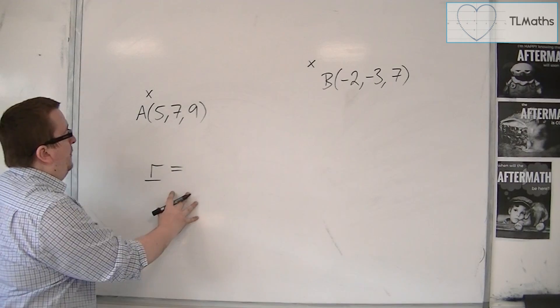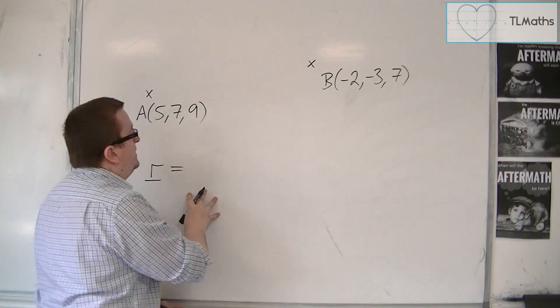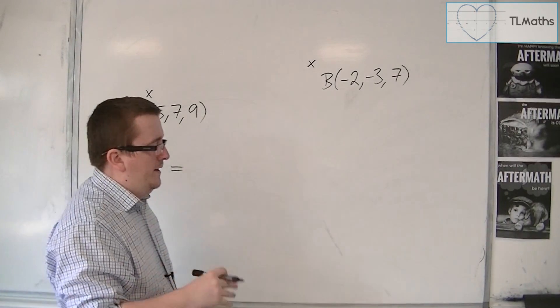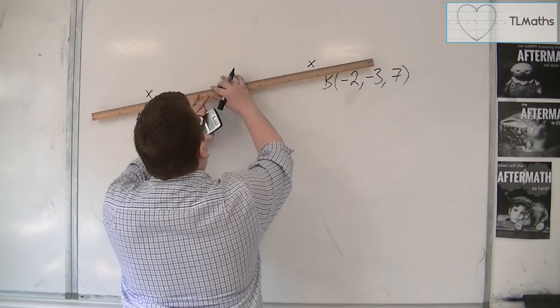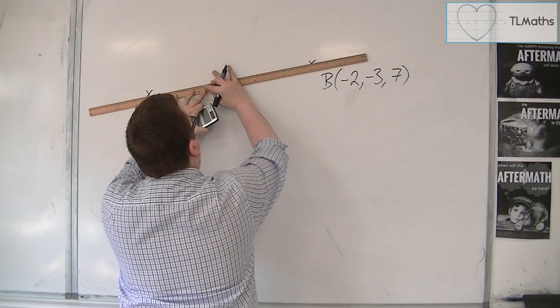So we start with R equals, and the position vector is a point that is on the line. If we draw in this line that goes through A and B,